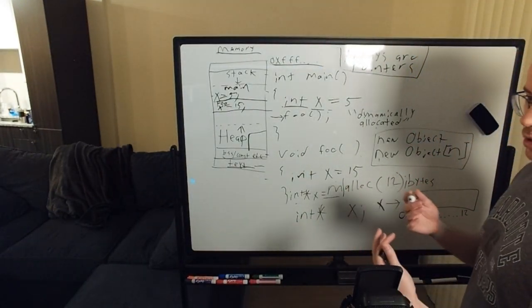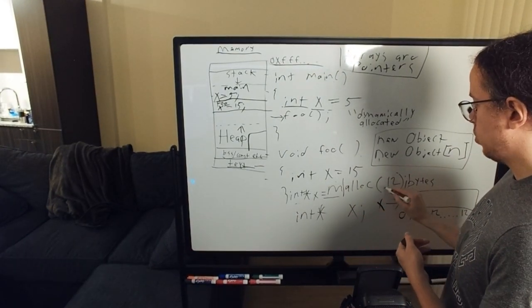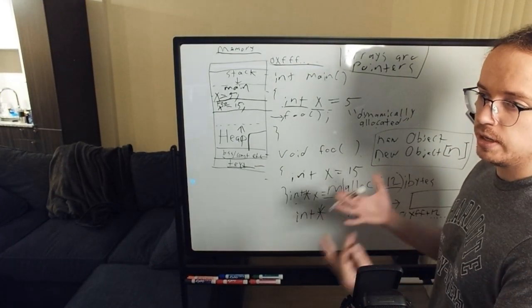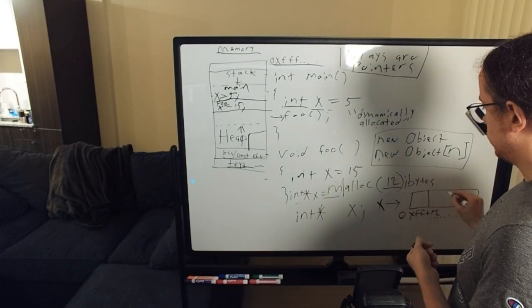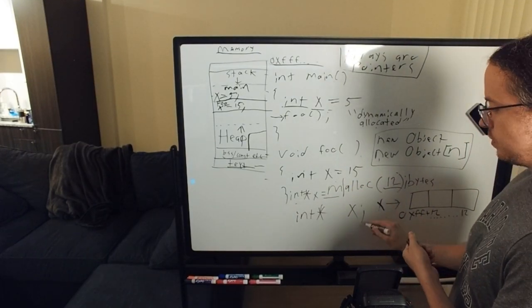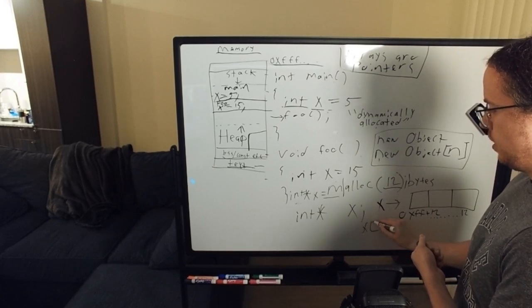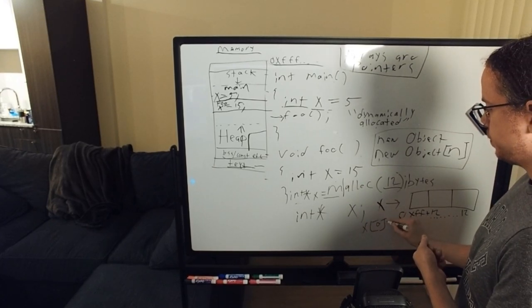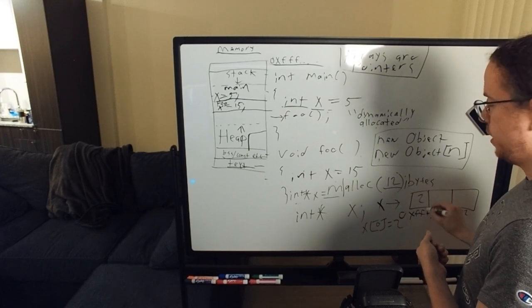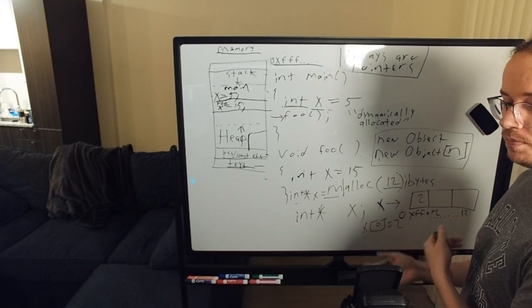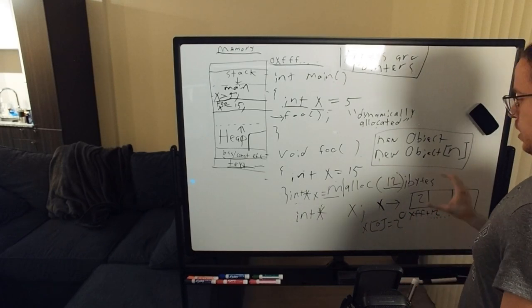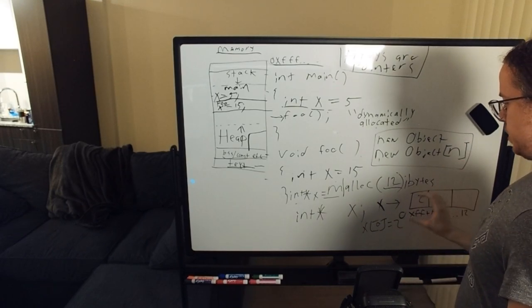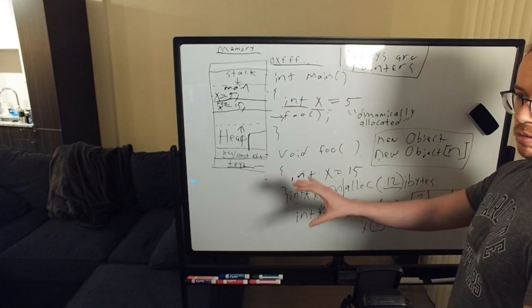This is how we do arrays in C. 12 bytes is three integers. 12 divided by four is three integers. So we could store three values here. You can say x zero equals two, and it will put a two here. So broadly speaking, this is how this works.